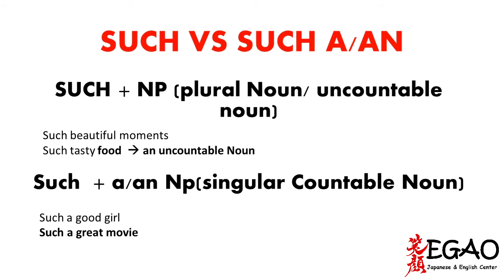When you use 'such' with 'a' or 'an,' it is only for a singular countable noun — only one thing. For instance: 'such a good call,' 'such a great movie.' The article 'a' or 'an' signals that the noun is singular and countable.